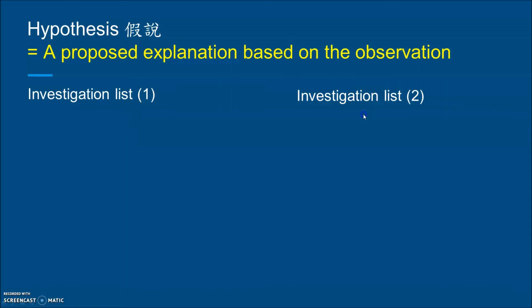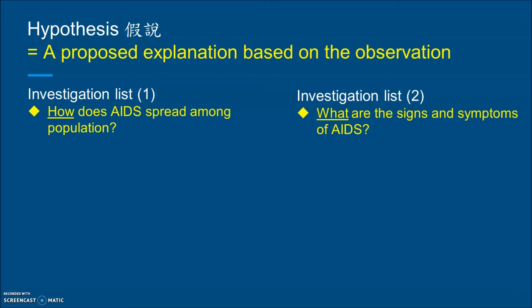I will use two investigation lists — List One and List Two — and make a parallel comparison. Later on, you will know in which type of scientific investigation we should have a hypothesis, and in which type it is not necessary to make one.